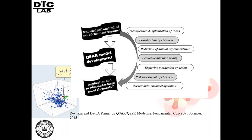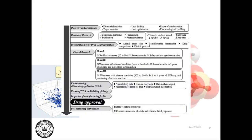QSAR can be used for identification and optimization of leads, prioritization of chemicals, reduction of animal experimentation, economic and time savings, exploring mechanisms of action, risk assessment of chemicals, and for sustainable chemical operation.